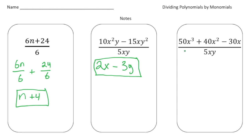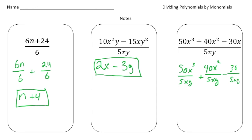The third one is a little more complex. We have 50x cubed plus 40x squared minus 30x, divided by 5xy. I'm going to write it out: 50x cubed divided by 5xy, plus 40x squared divided by 5xy, minus 30x divided by 5xy. The first part: 50 divided by 5 is 10, x cubed divided by x is x squared, but notice we still have a y in the denominator, so that stays down there.